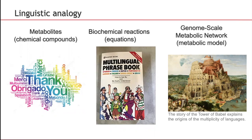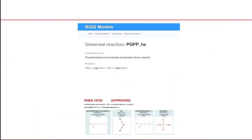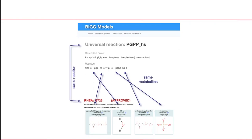And here exactly we can introduce MetaNetics MNXRef, which is primarily a multilingual dictionary for metabolites and reactions to link the major public resources related to metabolism. Very basically, for example, if you have two reactions in two databases, MNXRef is built first by attempting to establish identities between metabolites, which helps to deduce that the reactions in the two databases are in fact the same reaction.